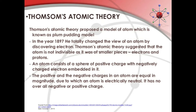In the year 1897, he totally changed the view of an atom by discovering the electron. By discovering the electron, the concept of the atom was completely changed. Thompson atomic theory suggests that the atom is not indivisible — earlier it was said that the atom is indivisible and cannot be seen, but after the discovery of the electron, Thompson said that the atom is made of smaller pieces: electrons and protons.